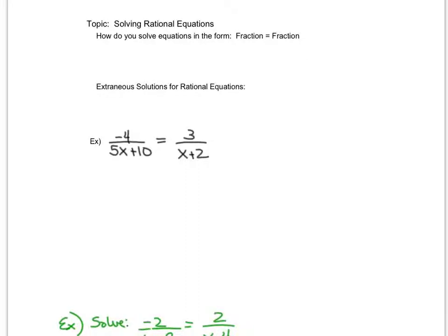Another type of equation that we need to look at solving are rational equations. Rational equations are in the form where you have basically a fraction equal to a fraction. Oftentimes you'll see in textbooks it's written as a function over another function, but really it's going to be in the form fraction equals fraction typically.